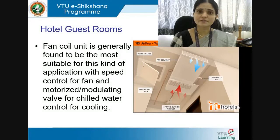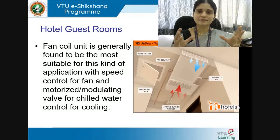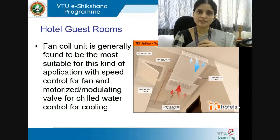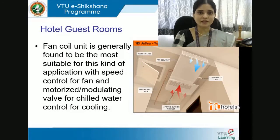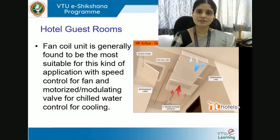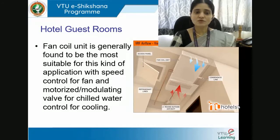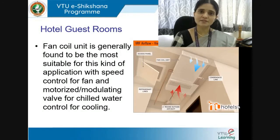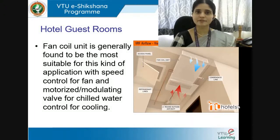The fan coil unit is a small cabinet-enclosed, factory-assembled unit which has the evaporator coil, filters, fan, and motor embedded. It is the smallest version of the air handling unit and is generally found to be the most suitable for hotel guest room applications. It typically includes speed control for the fan and a motorized modulating valve for chilled water control. The condenser-compressor is a single plant from which many evaporators branch out.